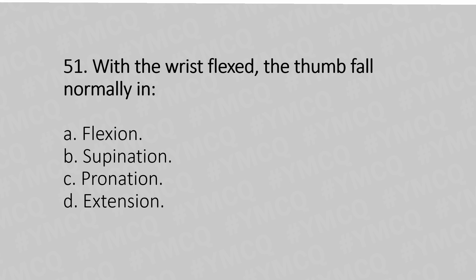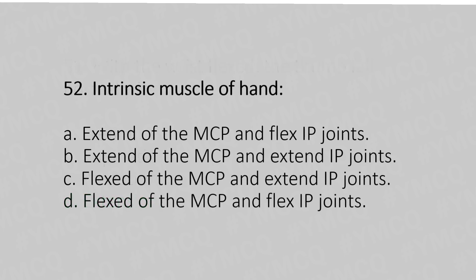Now let's move to question number 51. With the wrist flexed, the thumb folds normally in: option A, flexion; option B, supination; option C, pronation; option D, extension. And the answer is option D, extension.